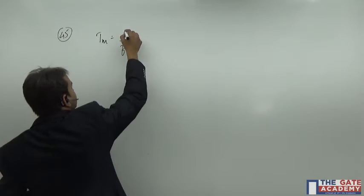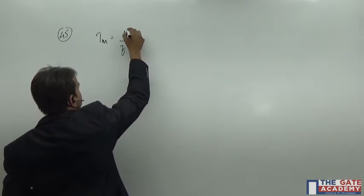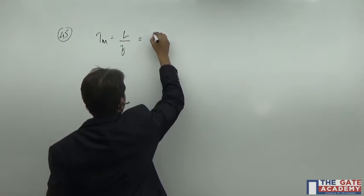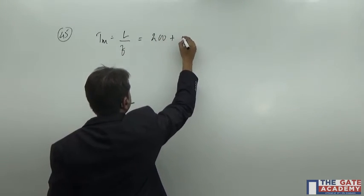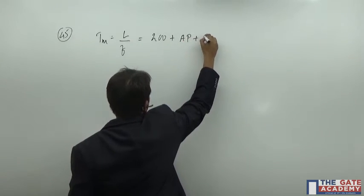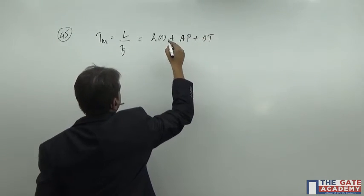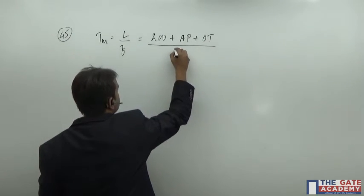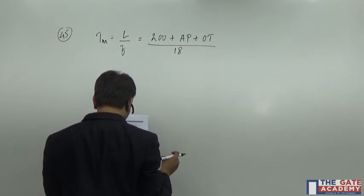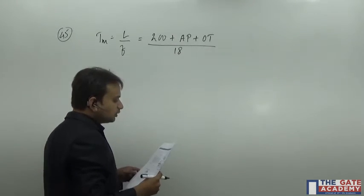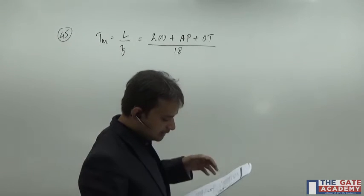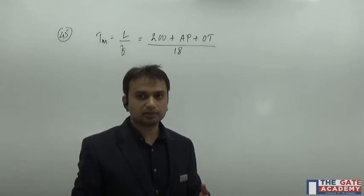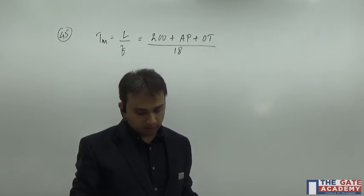Now the thing is that you need to understand what is this length. Because this length is not just 200 mm. It is not just 200 mm, but there is one approach length plus over travel. There is approach length and over travel length also and the table feed is given to you as 18 mm per minute. And one more thing is given to you that the approach and over travel of the cutter are same, so we don't have to worry about individually about both of them.